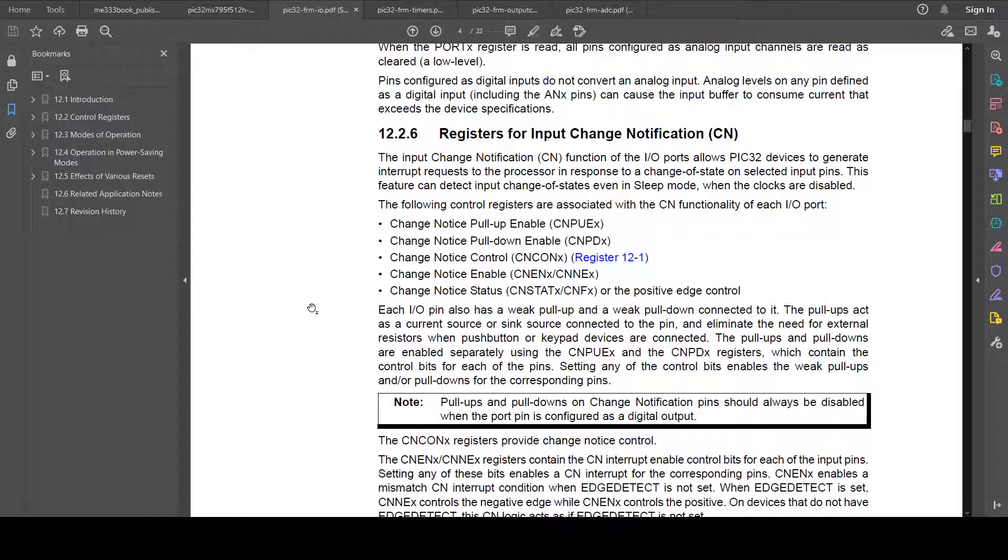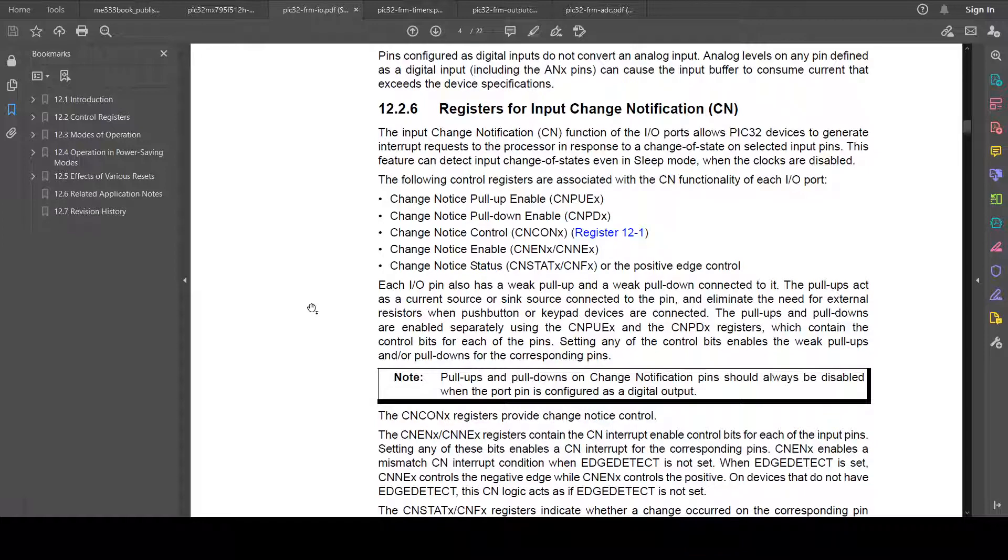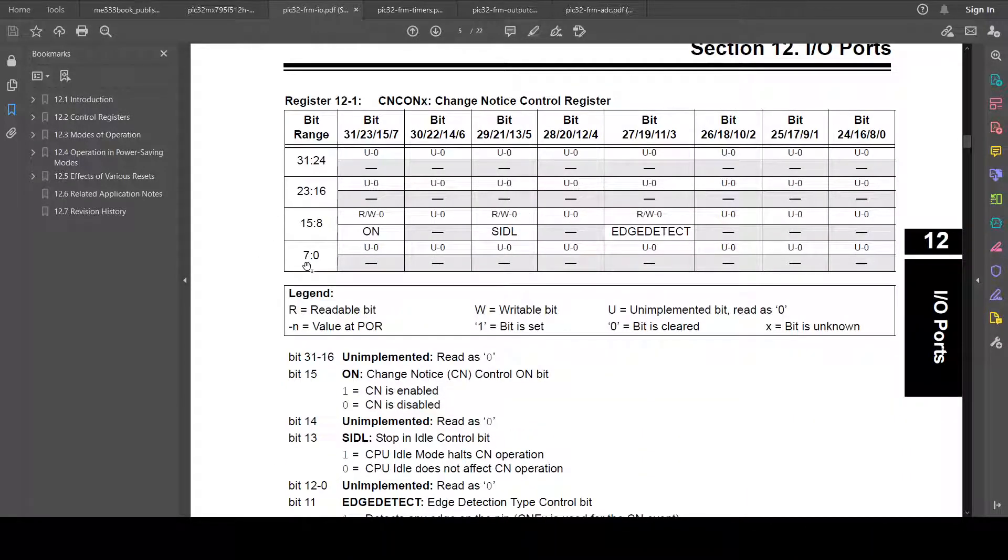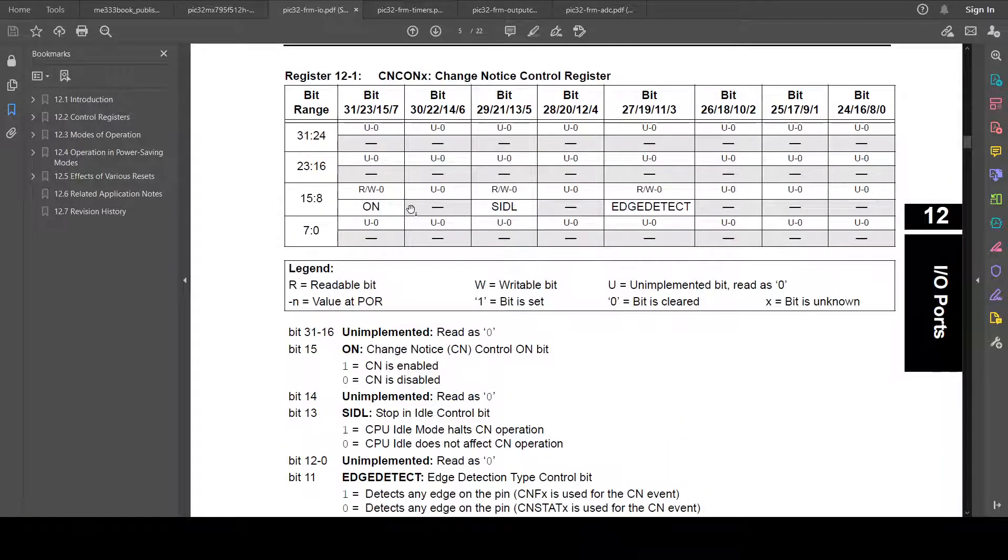After that sales pitch, now we get to see what are the special function registers. So we see the TRS register, the port register, the LAT register. So TRS is for controlling whether it's an input or output. Port is, if it's an input, you can read it to see whether it's high or low. LAT, if the pin is an output, whether it's on or off.